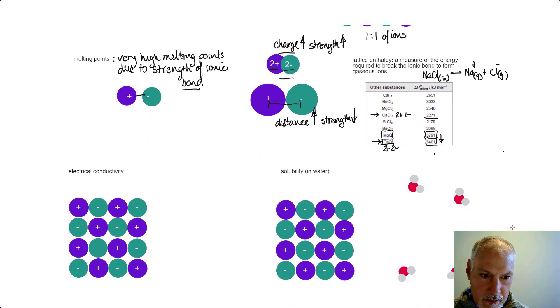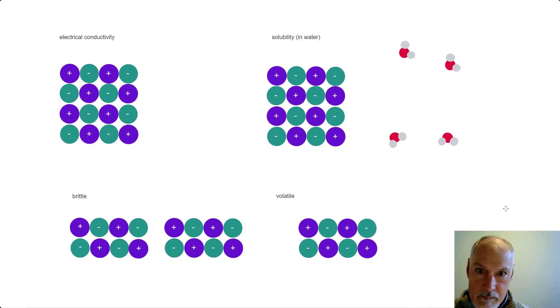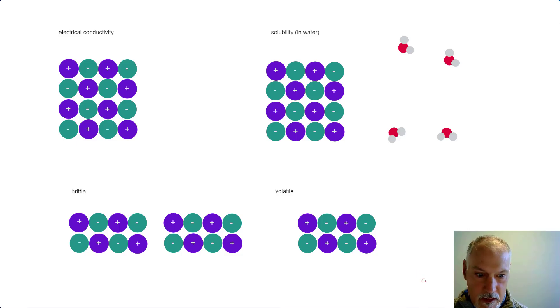Let's look at some other properties. What about electrical conductivity? In order to conduct electricity, you must have charges that can freely move. Electrical conductivity requires mobile charges. In the solid state, the charges are locked in place by the ionic bond, so we're a poor conductor.